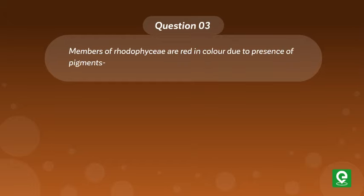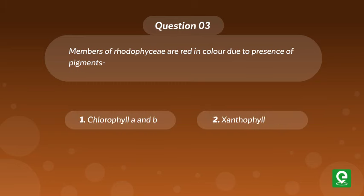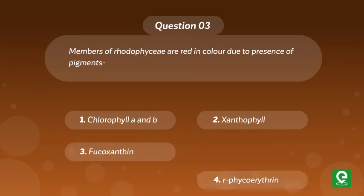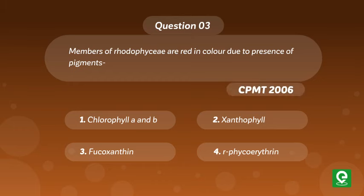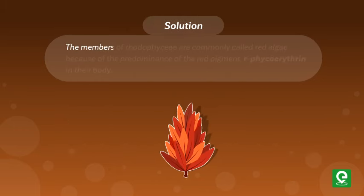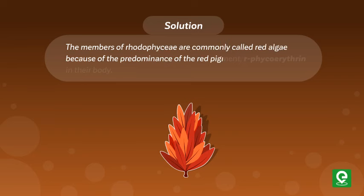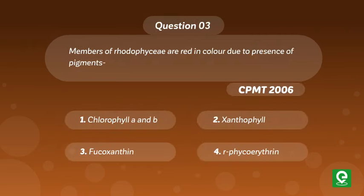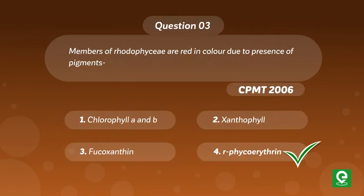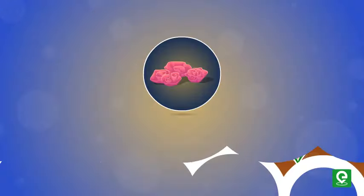Question 3 (CPMT 2006): Members of Rhodophyta are red in color due to presence of pigments — (1) Chlorophyll a and b, (2) Xanthophyll, (3) Fucoxanthin, or (4) r-Phycoerythrin? Solution: The members of Rhodophyta are commonly called red algae because of the predominance of the red pigment r-phycoerythrin in their body. Hence option four is correct.